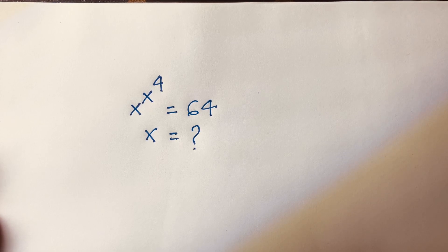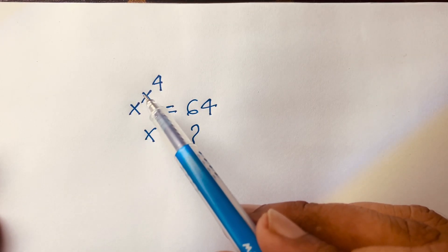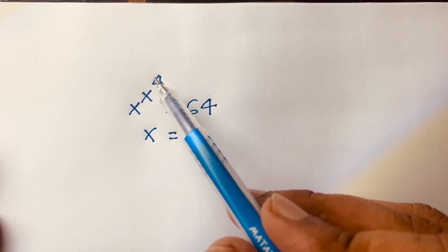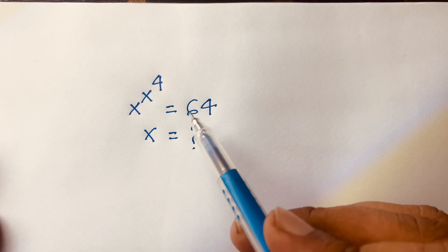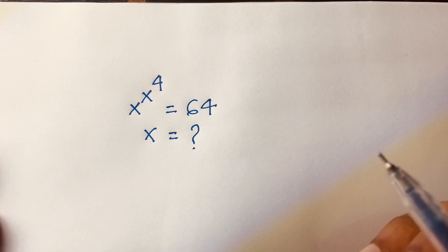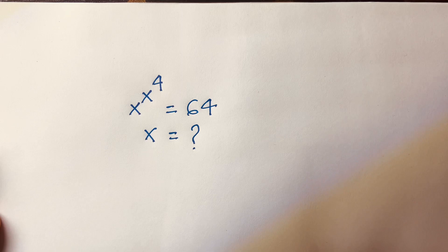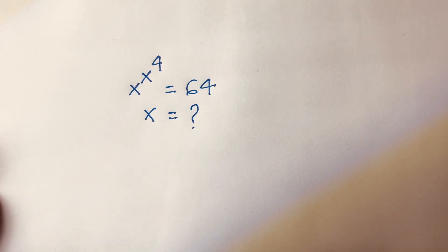Hello everyone. In this video we are solving this interesting math problem — it is a Math Olympiad question. x to the power x to the power 4 is equal to 64. We are finding out what is the value of x in this exponential equation. How to solve this question — it is interesting math.